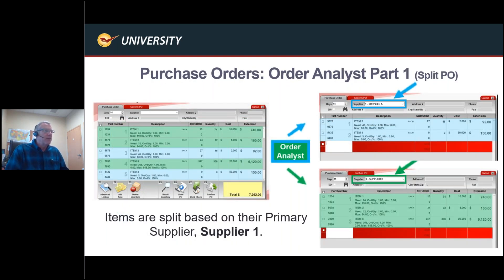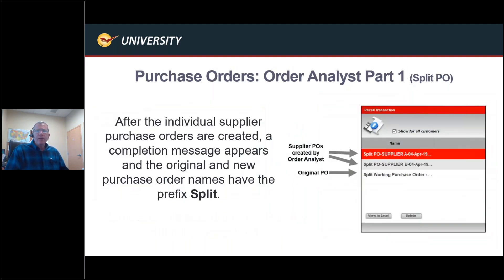Here's what the split looks like: on the left you have your full pre-split order. Once you answer yes to split, it divides it based on supplier number one position, presenting Supplier A and Supplier B. On the PO screen, the original 'split working purchase order' is preserved — you can remove it when done. Make sure you do not submit both the original working purchase order and the split ones, as they are duplicates. Delete the original once you have your supplier-specific orders.